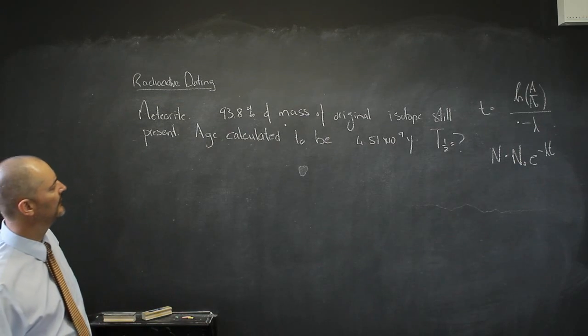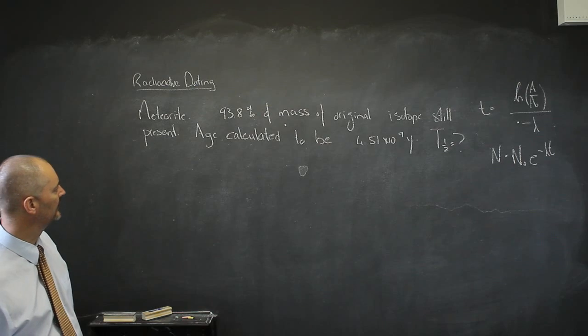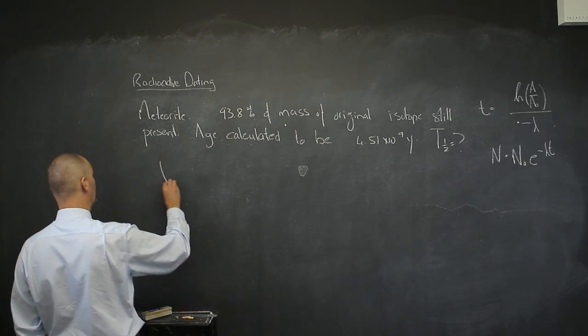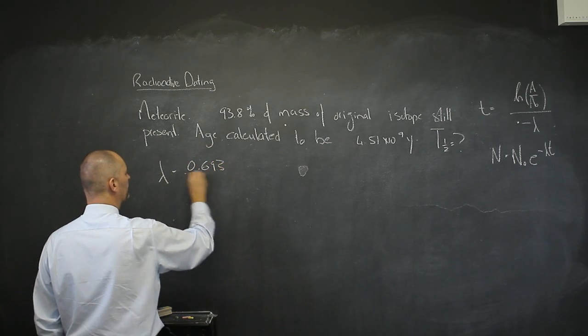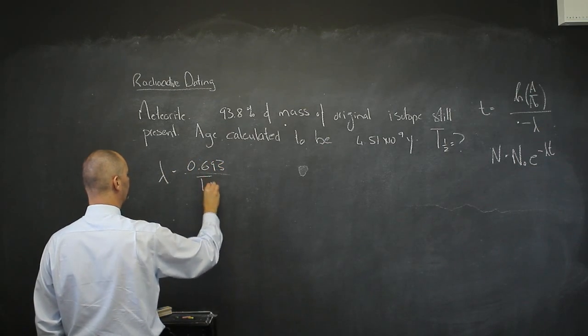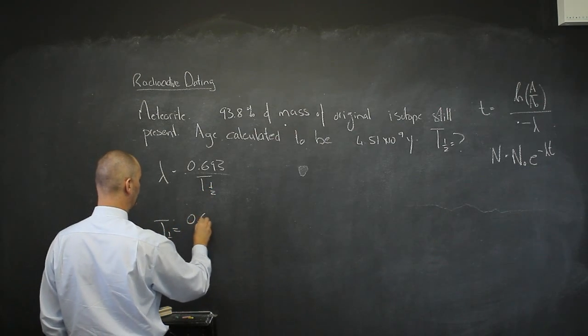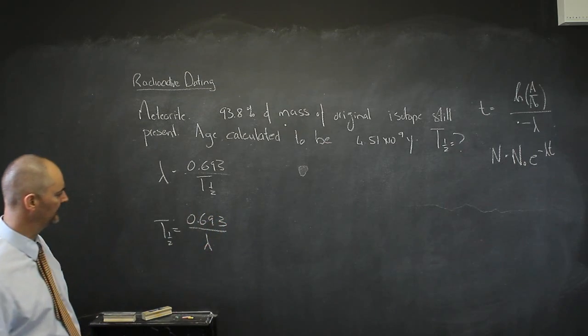Let's do it. Do we know an equation? What equation do we know for half-life? We know that the decay constant λ equals the natural log of 2 divided by the half-life. That means the half-life equals 0.693 divided by the decay constant. I don't know what the decay constant is, but I know another equation that has the decay constant in it.